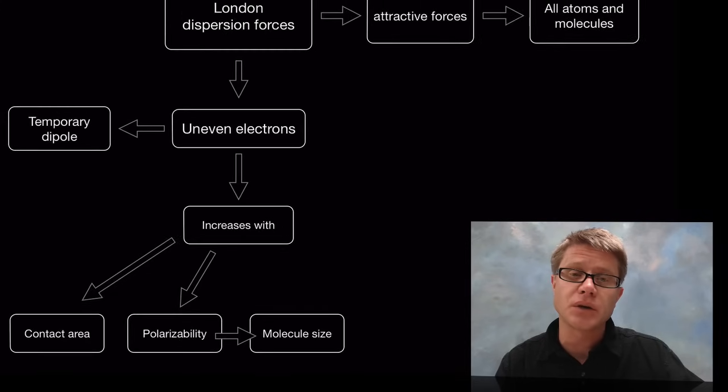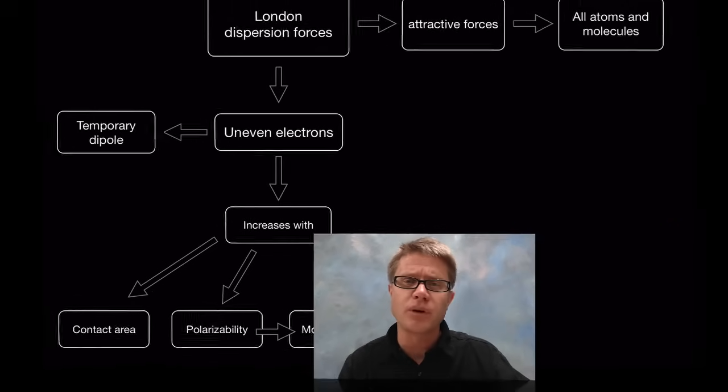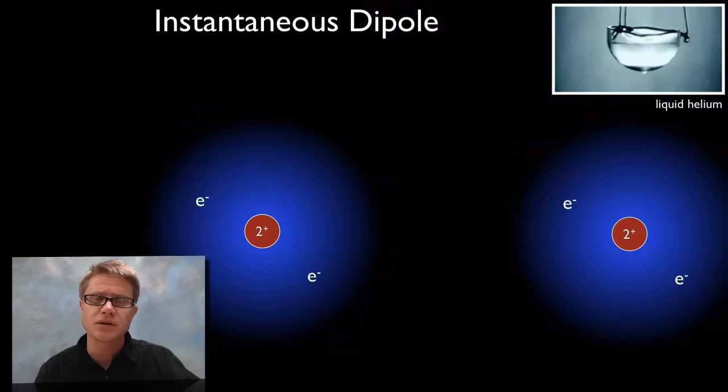And so as we increase molecular size we're going to increase these dispersion forces. And finally pi bonding, which is going to be where orbitals overlap. If we have more pi bonding we're going to increase these. And so let's look at it.